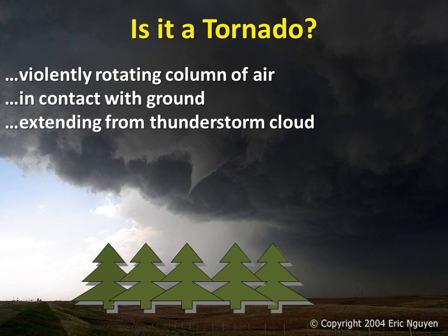A tornado is connected to the base of the thunderstorm and is in contact with the ground. Ask yourself these questions when you are trying to determine whether the cloud you are observing is a tornado. Can you see it clearly? Is it attached to the base of the storm? Is it in a spot where you would expect the tornado to form, near the updraft area?